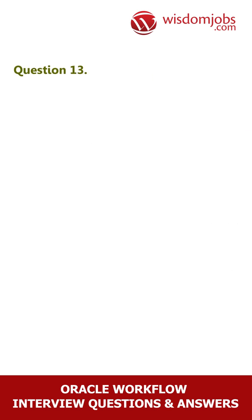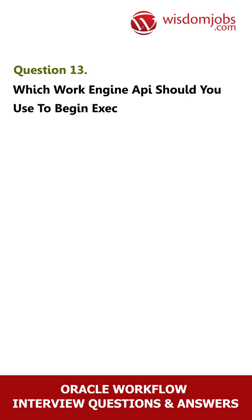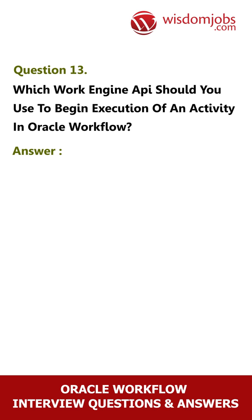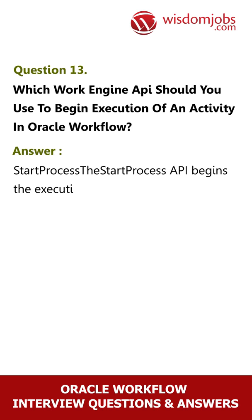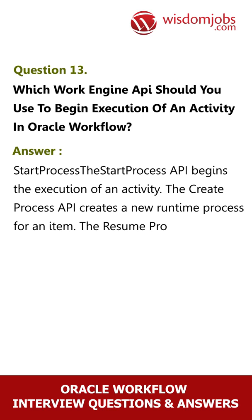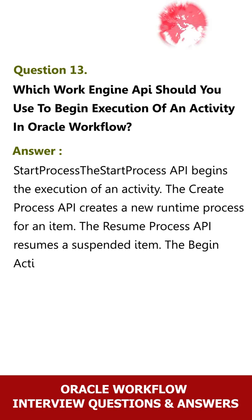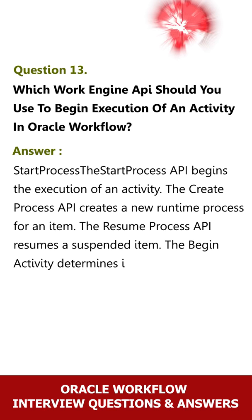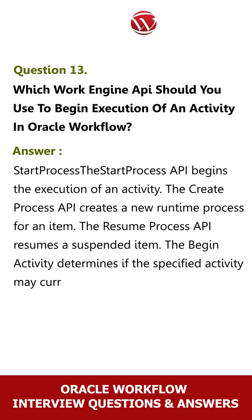Question 13: Which Workflow Engine API should you use to begin execution of an activity in Oracle Workflow? Answer: Start Process. The Start Process API begins the execution of an activity. The Create Process API creates a new runtime process for an item. The Resume Process API resumes a suspended item. The Begin Activity API determines if the specified activity may currently be performed on the item.